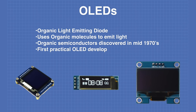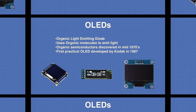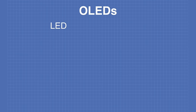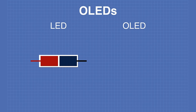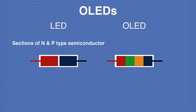The first practical OLEDs were developed by laboratories at Kodak in 1987. Now let's take a look at the difference between an LED and an OLED. Internally, an LED consists of an N and a P type semiconductor material, while an OLED consists of several layers of organic molecules.